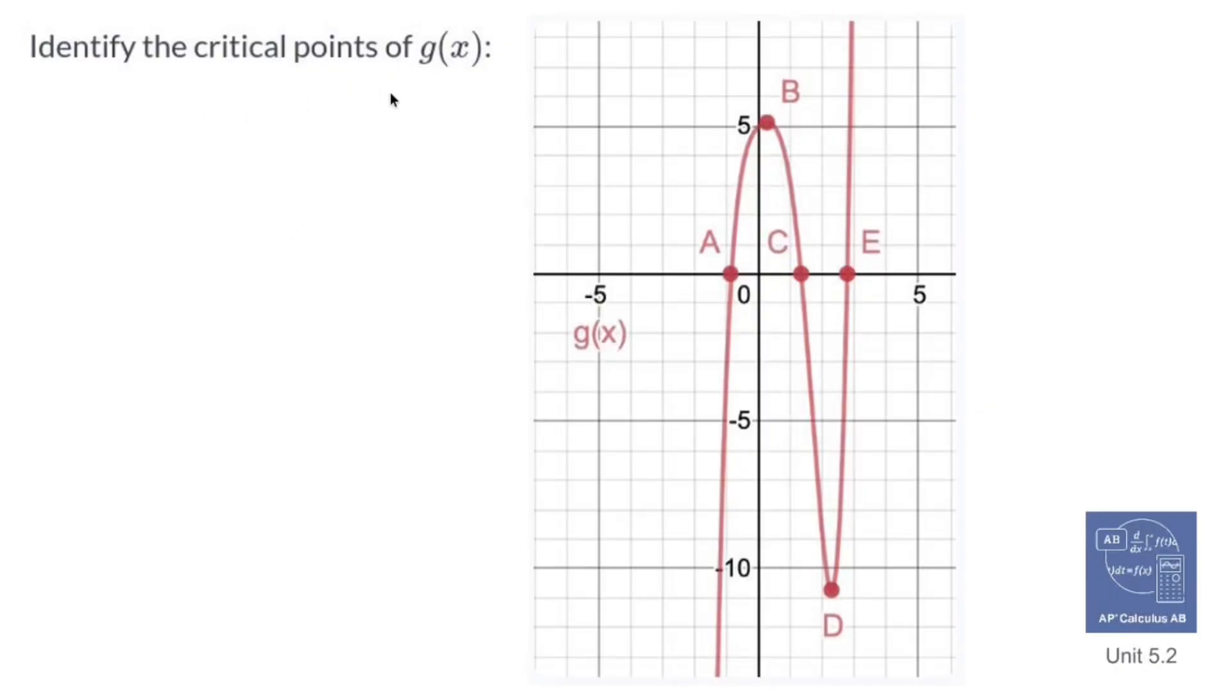Identify the critical points of g(x). Well, critical points of a function exist when the derivative is equal to zero. Now, derivative is equal to zero is just fancy talk for saying that the slope is horizontal. So at any points we have an instantaneous rate of change be a flat line, we're going to have a critical point. So that happens here at B. B has an instantaneous rate of change that is a flat line. And down here at D, you get the same exact thing.